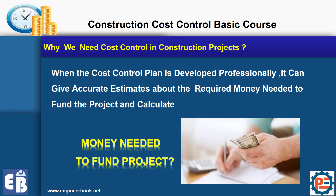Let's say you have a project worth 200 million — you don't need to have 200 million. You need a certain amount of capital to start funding the project. Performing cost control will give you accurate information about how much and when you need it most — the worst point in your cash flow where you need to fund the project. We'll see this in a few seconds.